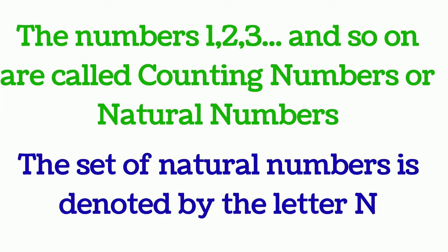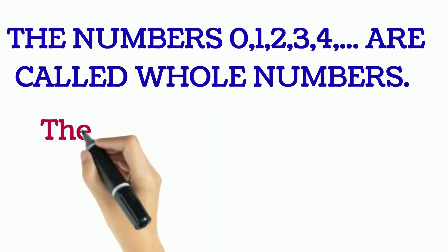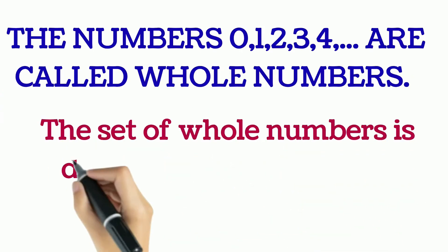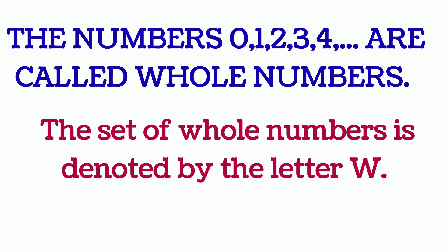So what are whole numbers? The number zero along with the natural numbers are called the whole numbers, and the set of whole numbers is denoted by the letter W.